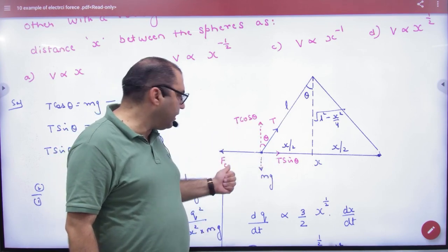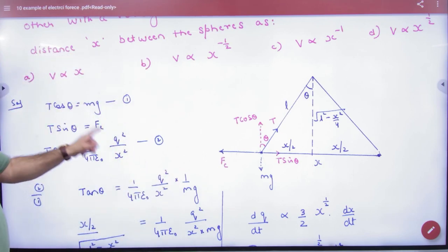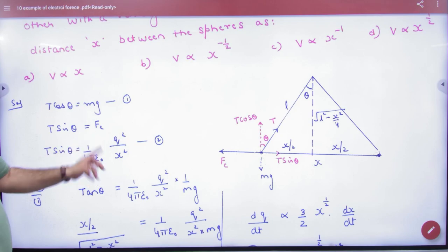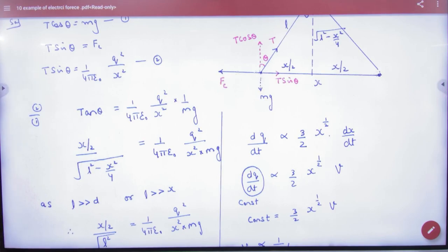So T cos θ = mg, T sin θ = Fe. Fe value will be 1 by 4π ε₀ times Q into Q by x². This is T sin θ, this is T cos θ. Let's divide them both. Sin by cos is tan θ.